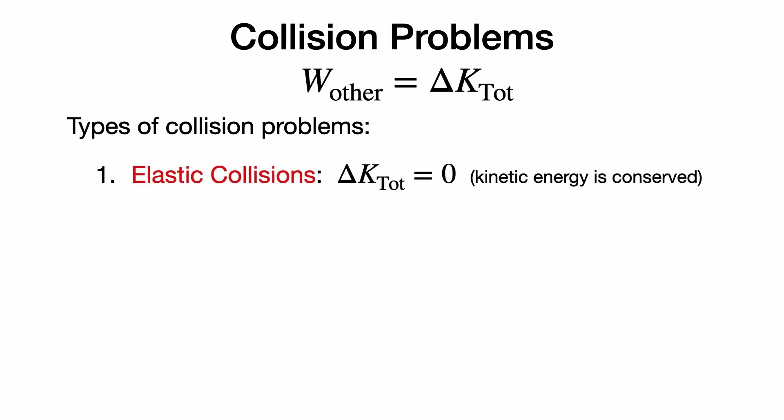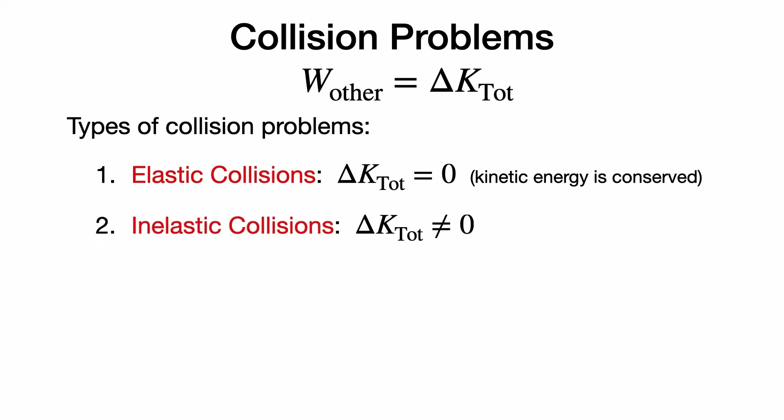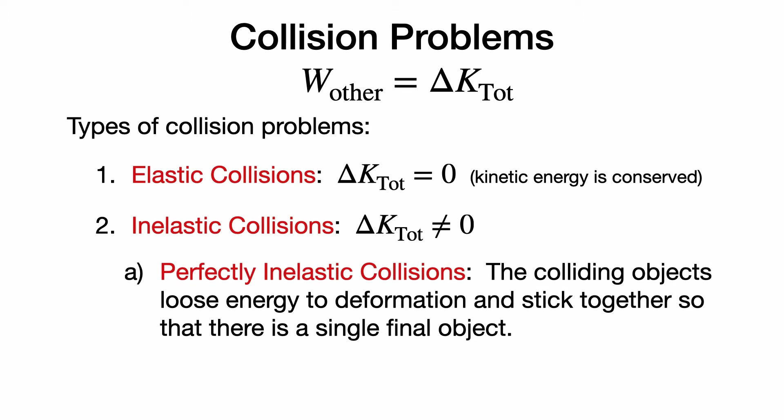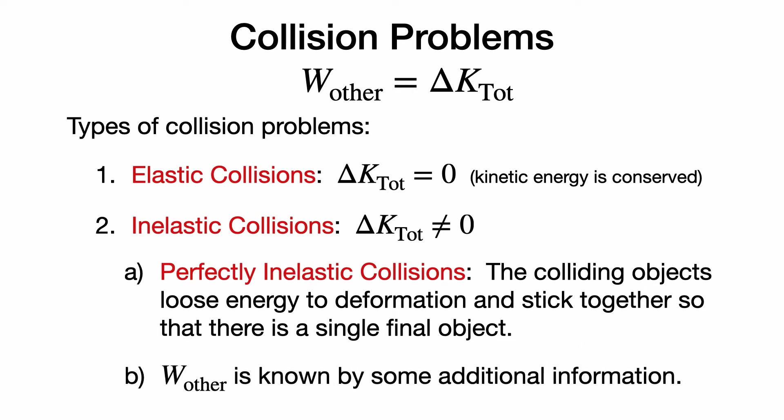The types of collision problems fall into two basic categories. First, if the total kinetic energy is conserved, then we have what is called an elastic collision. On the other hand, if the total kinetic energy is not conserved, we have something called an inelastic collision. Inelastic collisions can be broken down further. First, we have perfectly inelastic collisions, where the colliding objects lose energy to deformation and stick together so that there is a single final object moving with a single velocity. All other kinds of inelastic collisions need additional information about the work done by non-conservative forces in order to solve them.